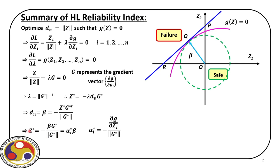The equation z star equal to alpha_i star times beta cannot be solved directly because we do not know the value of beta. This solution is proposed iteratively using an algorithm called the Rackwitz algorithm. We put z star back into the original limit state gz equal to 0, get an expression in terms of alpha and beta, then start with an initial guess and iteratively solve for the reliability index beta.